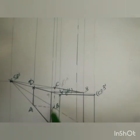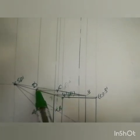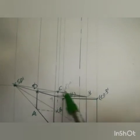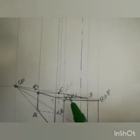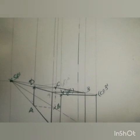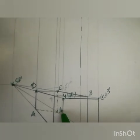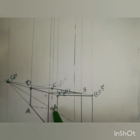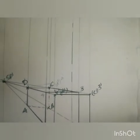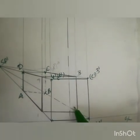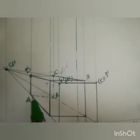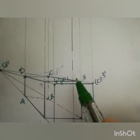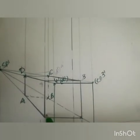Now join all the perspective points: D-A, 1-2, 2-3, 3-4, 4-1, D-1, A-4, D-C, and the rear edges A-B dotted, B-C dotted, B-2 dotted to complete the perspective projection of the prism.